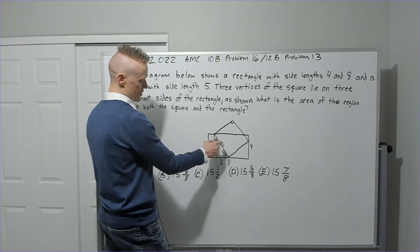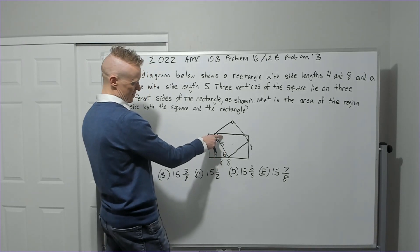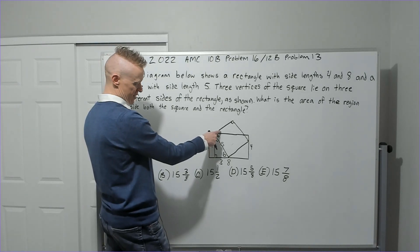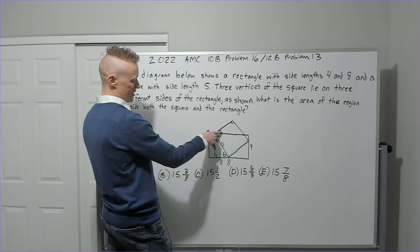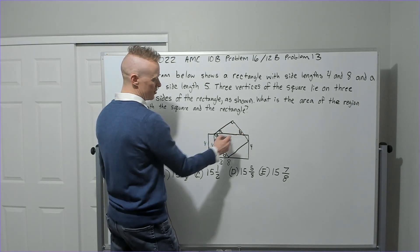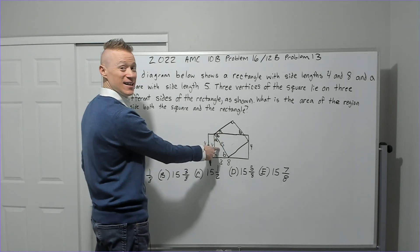Then also B is alternate interior. It makes sense. But this is also 90, which means that is also A. And since that's A, this will be B over here. And so now we're going to have similar triangles here and here.